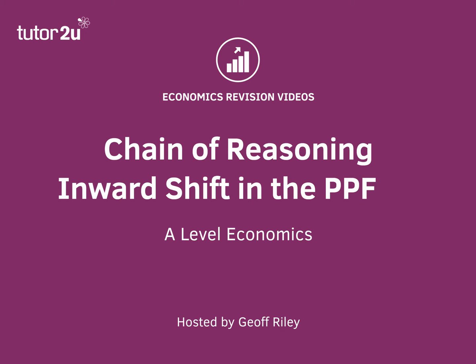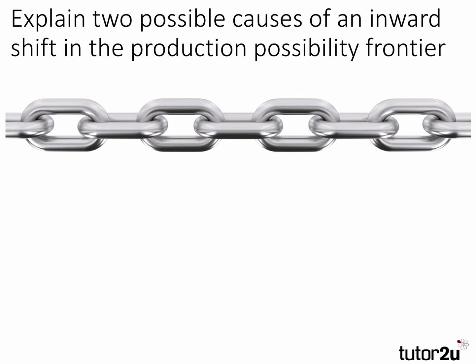Hi there and welcome to another in our series of chains of reasoning videos. We're looking at a particular topic and how to build chains of reasoning to get good analysis marks in your A-level papers. This time we're going to focus on a slightly quirky question: explain two possible causes of an inward shift in the production possibility frontier.